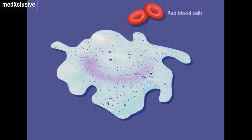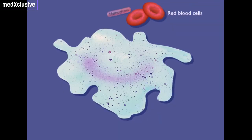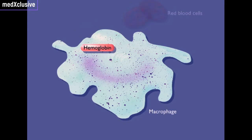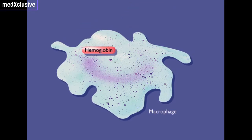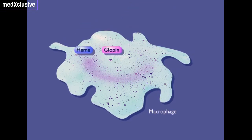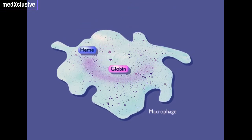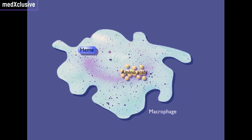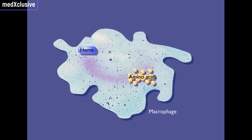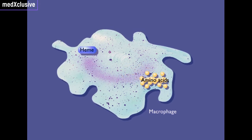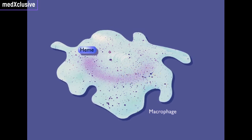When old red blood cells rupture, the released hemoglobin is ingested by macrophages. The globin chains of hemoglobin are broken down to individual amino acids that are metabolized or used to build new proteins.